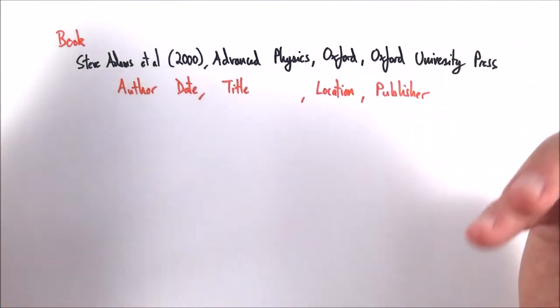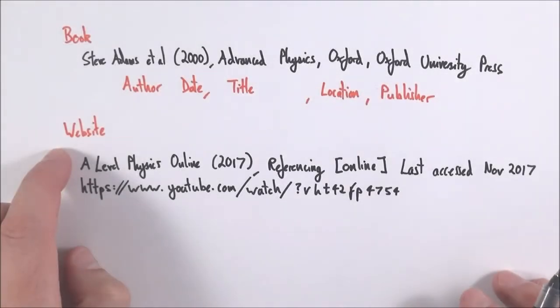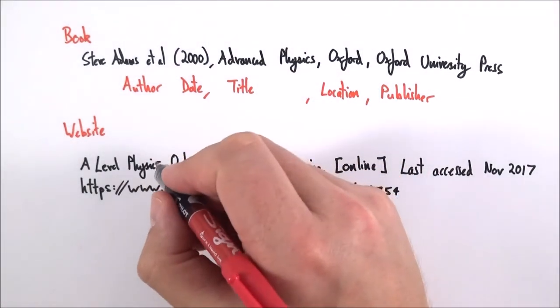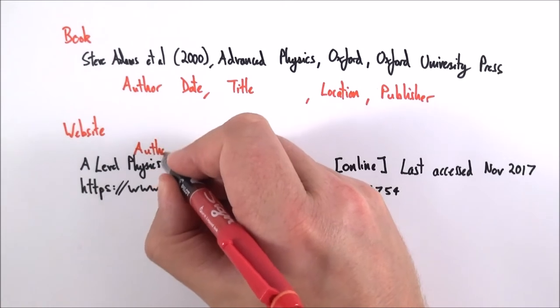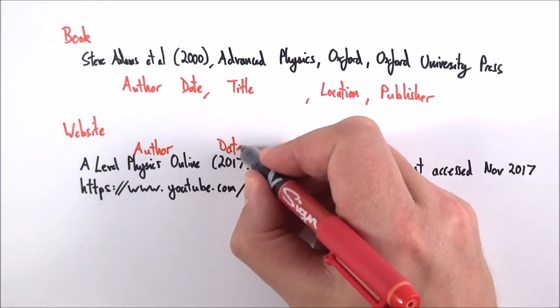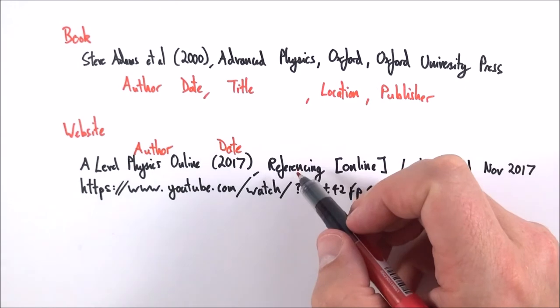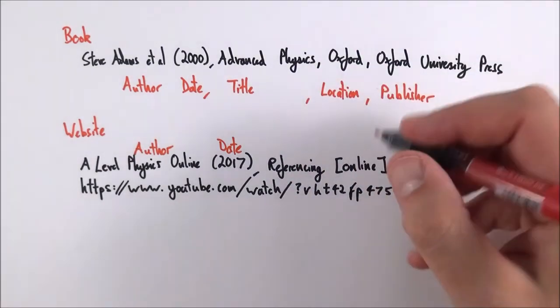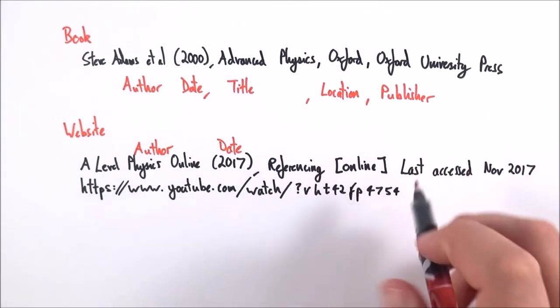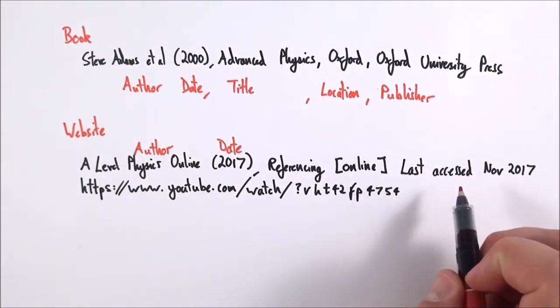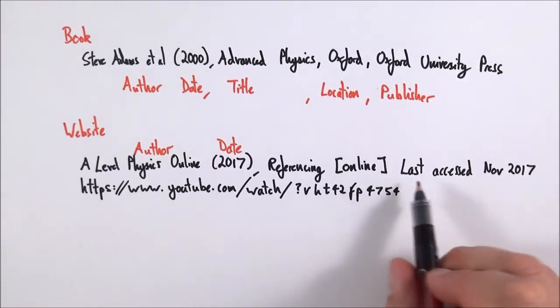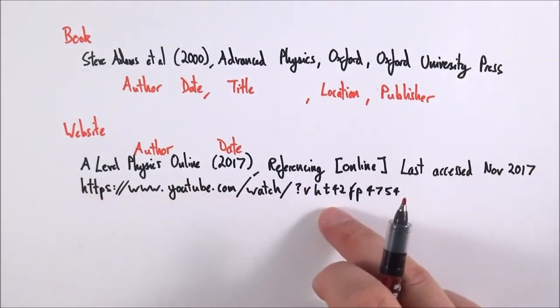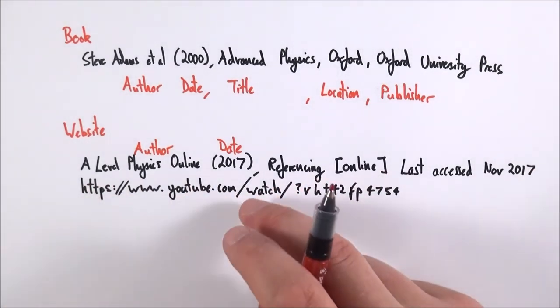Often you're using websites and this is where you put first of all the author or maybe the website title. You then put the date just like we had before, you put down the title of the thing that you're referencing, in this case it's a video called Referencing which is actually the one that you're watching now. And then you've got it's online so that's just put in square brackets. It's also important to say when you last accessed it because websites do change and they get updated, so last accessed, this gives maybe November 2017, and then after that you can just paste in the link to the video or whatever it might be or the website itself that you're looking at.